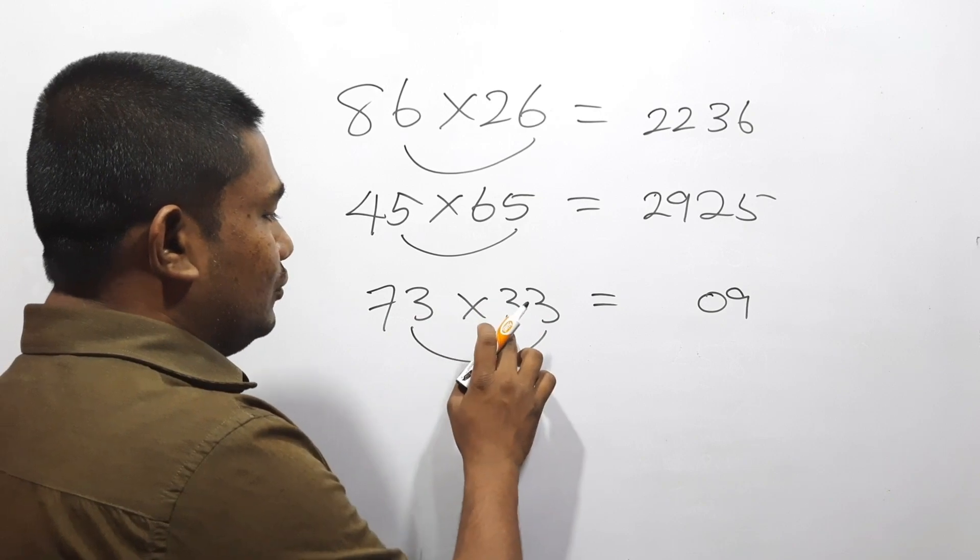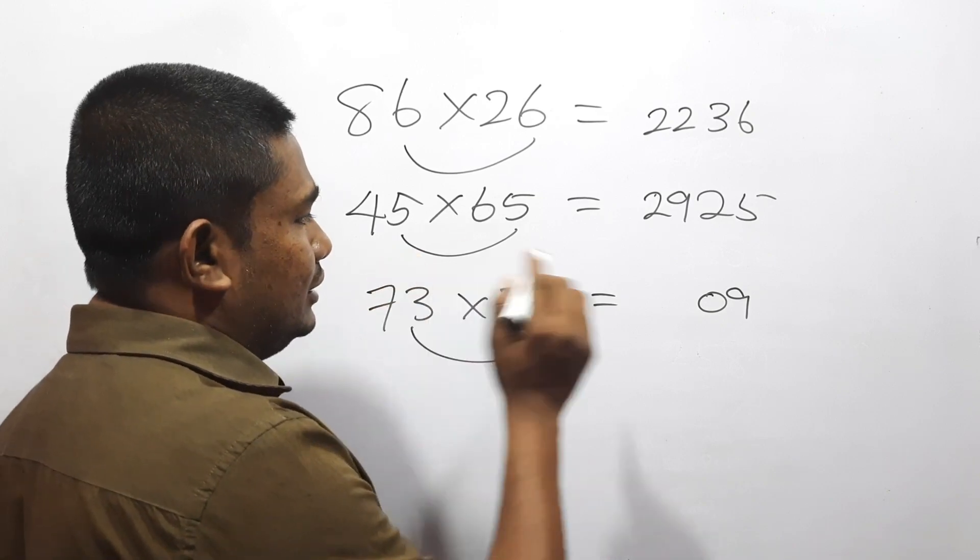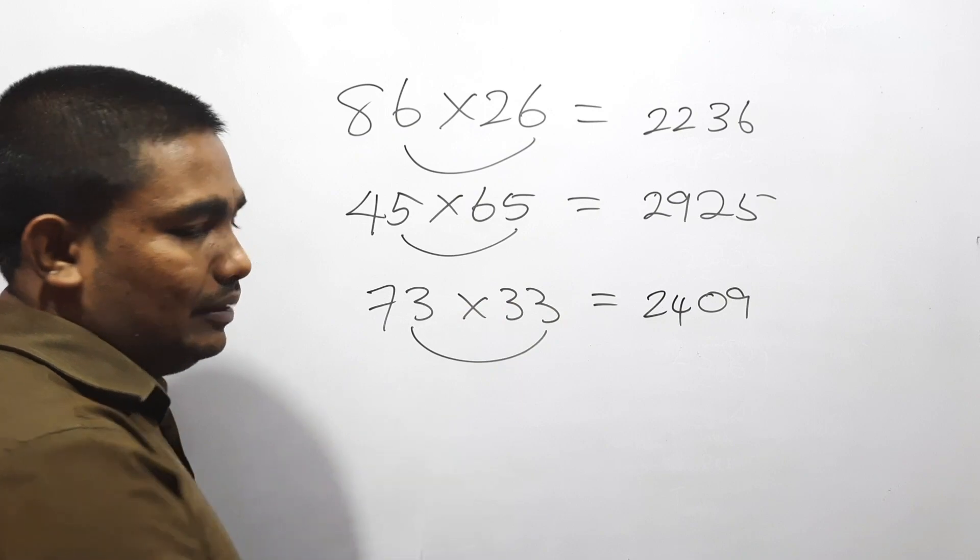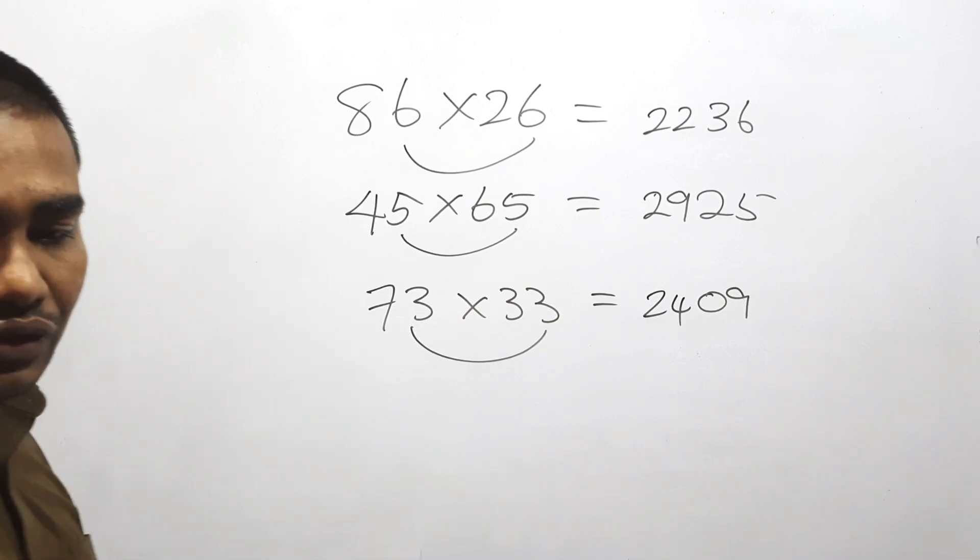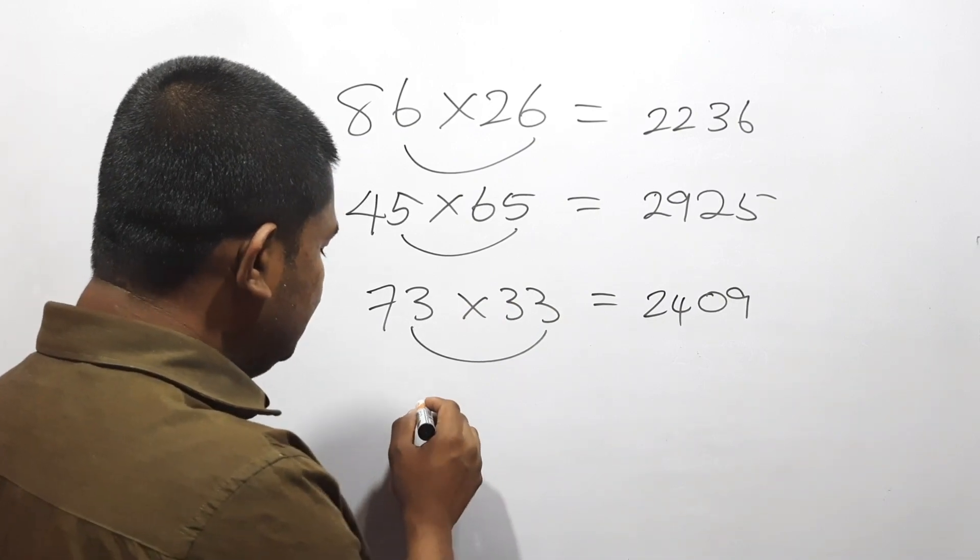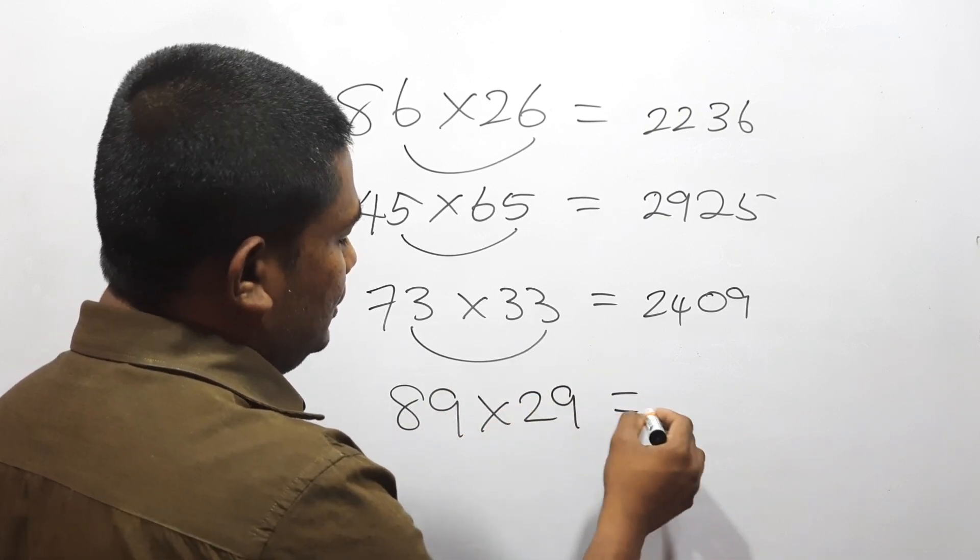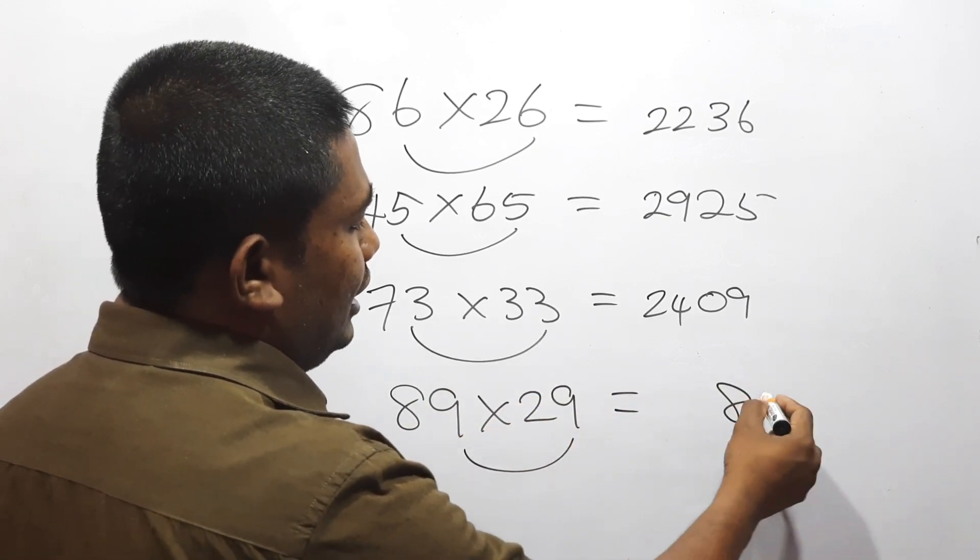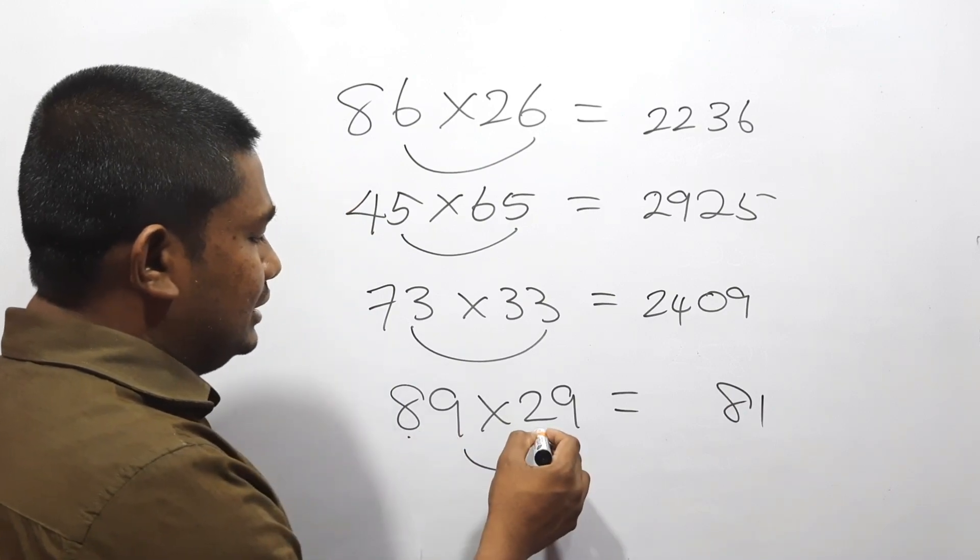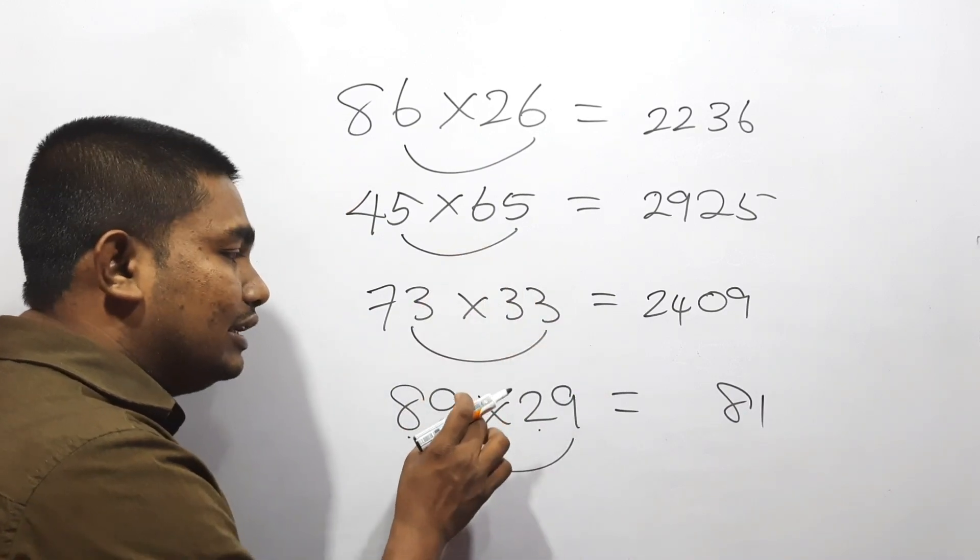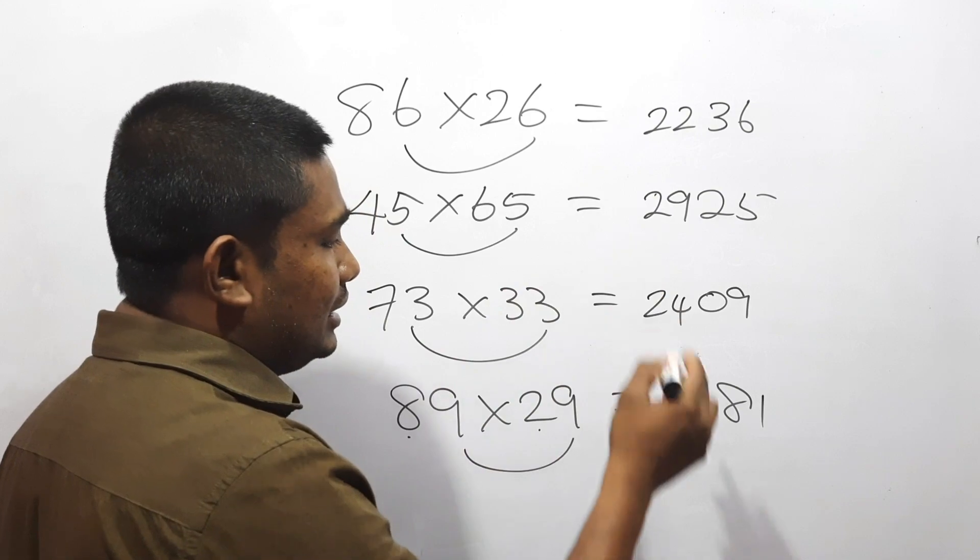Next one: 89 into 29. 9 into 9 is 81. 8 into 2 is 16, plus the unit place number 9 is 25. The answer is 2581.